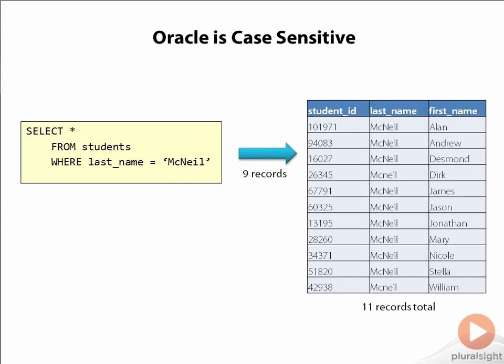The problem is that this query is only going to match nine of the rows, not all eleven, because two of the rows in the table have the N character in lower case. So if the user was really searching for Dirk or William, they wouldn't find those names in the search results, and that would be confusing.